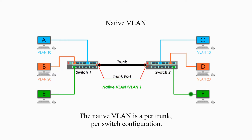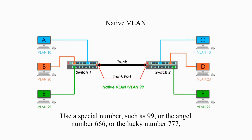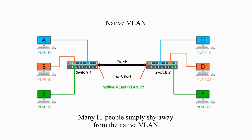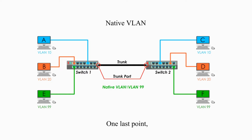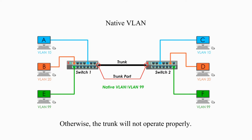The native VLAN is a per-trunk, per-switch configuration. A best security practice is to change the native VLAN to a different VLAN other than VLAN1 — use a special number such as 99, or 666, or 777. Because the default native VLAN, which is VLAN1 on a Cisco switch, allows a possible VLAN hopping attack, many IT people simply shy away from native VLAN. One last point: the native VLAN should be the same on both ends of the trunk; otherwise, the trunk will not operate properly.